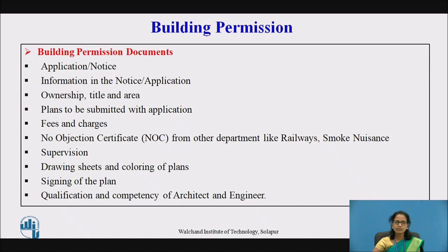Supervision has to be considered — supervision by engineers or architects. They will be filling the form in Appendix B1. Next is the drawing sheets and coloring of the plans — at least four copies of the drawings have to be submitted. Then the signing of the plan and finally the qualification and competency of the architect and engineer.